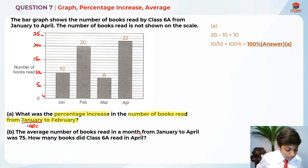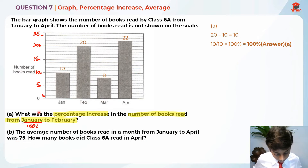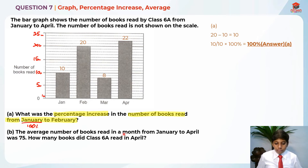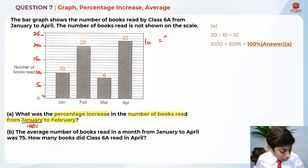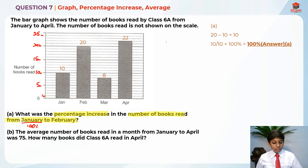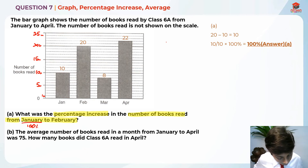For Part B: the average number of books read in a month from January to April was 75. How many books did class 6A read in April? Some of you might be thinking the answer is 22, but that's not correct — April is 22 units, not 22 books. We do not know what 1 unit equals in actual books, so that's why they've given us the average to calculate the exact value.